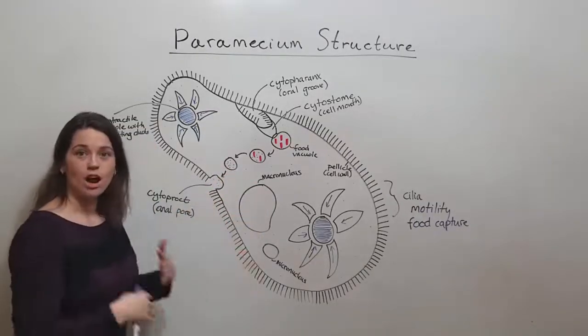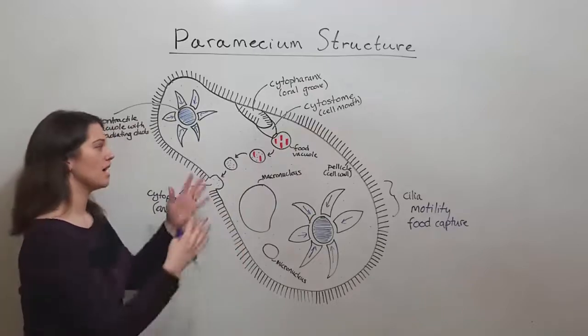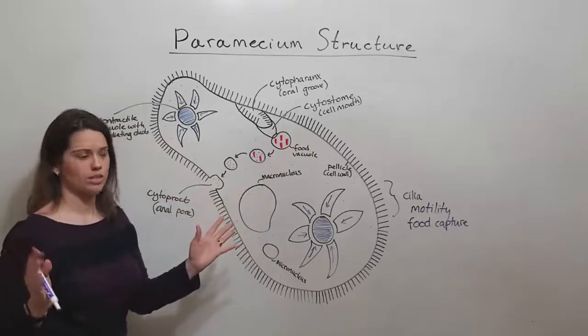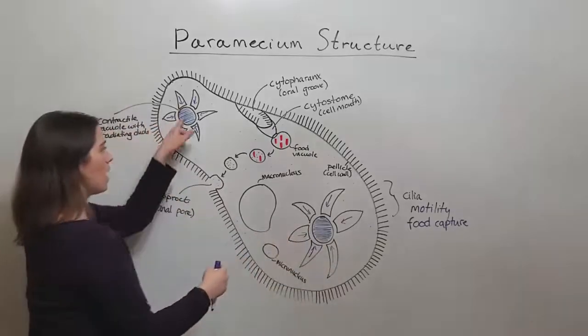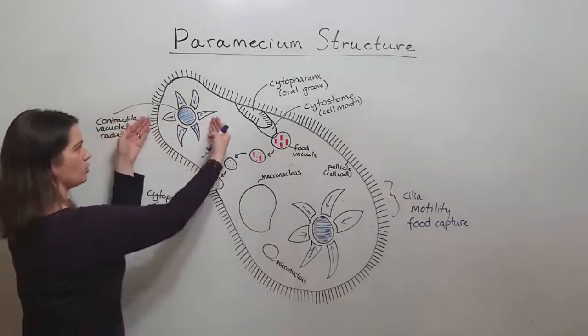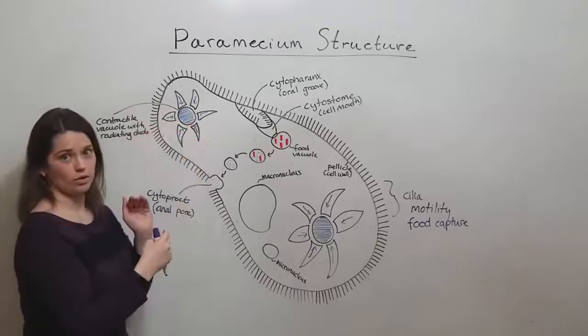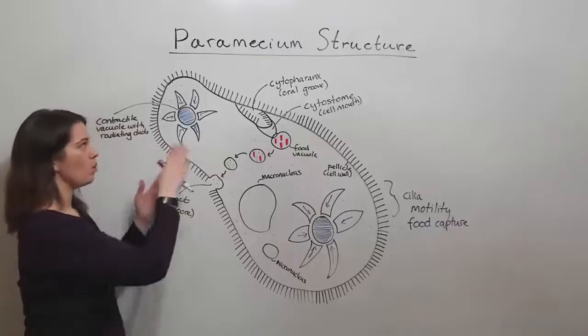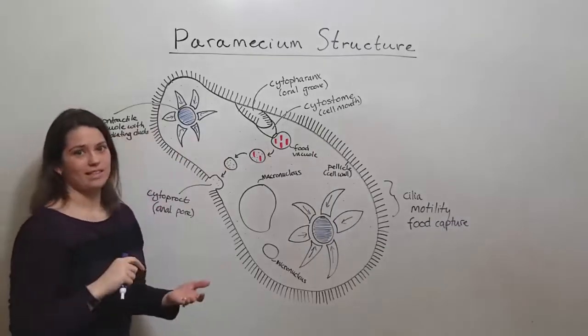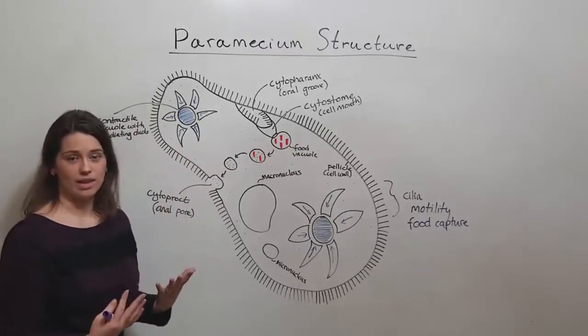If water was just allowed to constantly flow in and in, the cell would swell and it would burst. These collecting channels around the contractile vacuoles help to collect water into the contractile vacuoles. The contractile vacuoles then contract and expel water back outside the cell, helping it to osmoregulate.